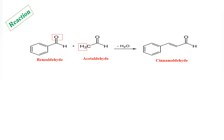This is an alpha-beta unsaturated carbonyl compound. The carbonyl group is the aldehyde. The carbon adjacent to it is called the alpha carbon, and the next carbon is called the beta carbon. The unsaturation is present between alpha and beta, which is why it is called an alpha-beta unsaturated carbonyl compound.